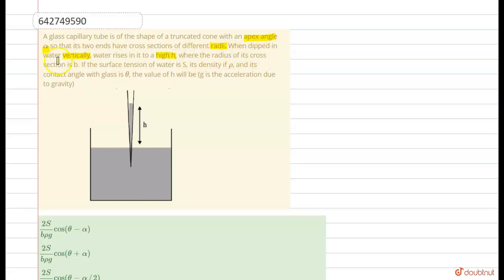When dipped in water vertically, water rises in it to a height h where the radius of its cross section is b. If the surface tension of the water is s, its density is rho, and its contact angle with glass is theta, the value of h will be... So in this question we have to find the value of h.